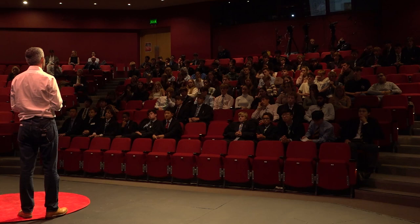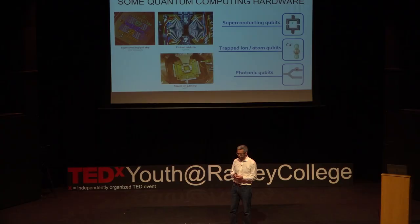Each of these technologies involves cooling chips down to extremely low temperatures — just a few degrees above absolute zero or even less — in order to achieve the desired performance. Superconducting circuits have been used to deliver the most complex quantum processes to date, and trapped ion qubits have shown the lowest error rates. But none of these technologies has yet demonstrated a quantum computer that can solve a useful problem better than a classical computer today.